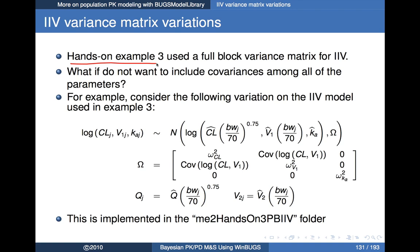In hands-on example 3, we had a full block variance matrix for all 5 PK parameters: clearance, distribution clearance Q, two volumes of distribution, plus KA — a full 5 by 5 variance matrix with all elements estimated. Frequently you may want to break that up in different ways. For example, in a PK-PD model, you might use a full variance matrix only for the PK parameters and a second one for the PD without correlations between them.